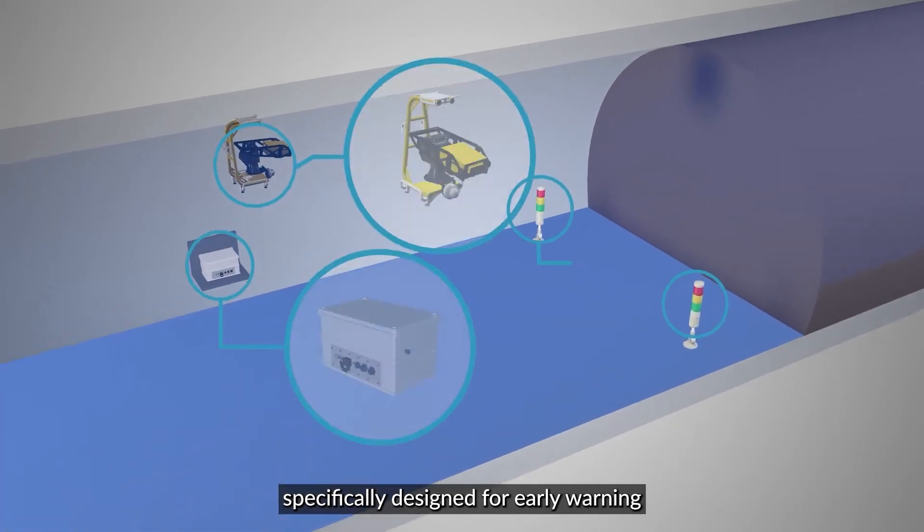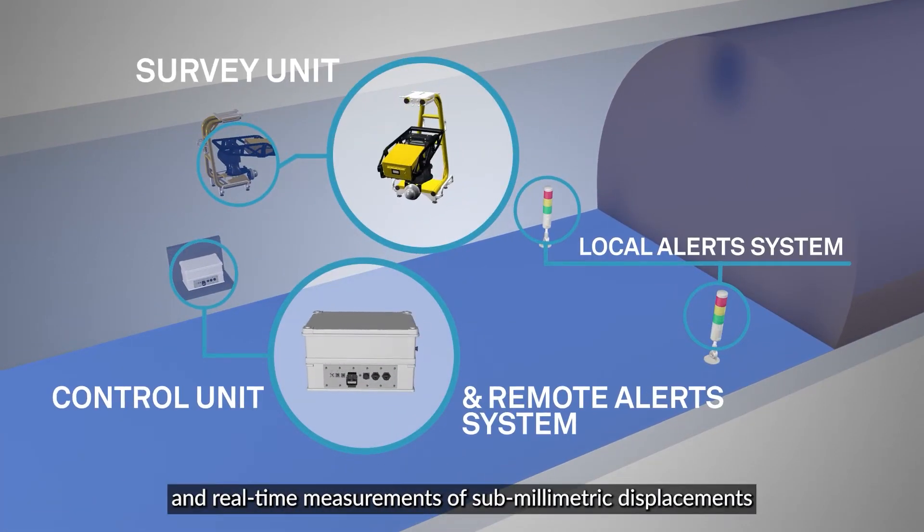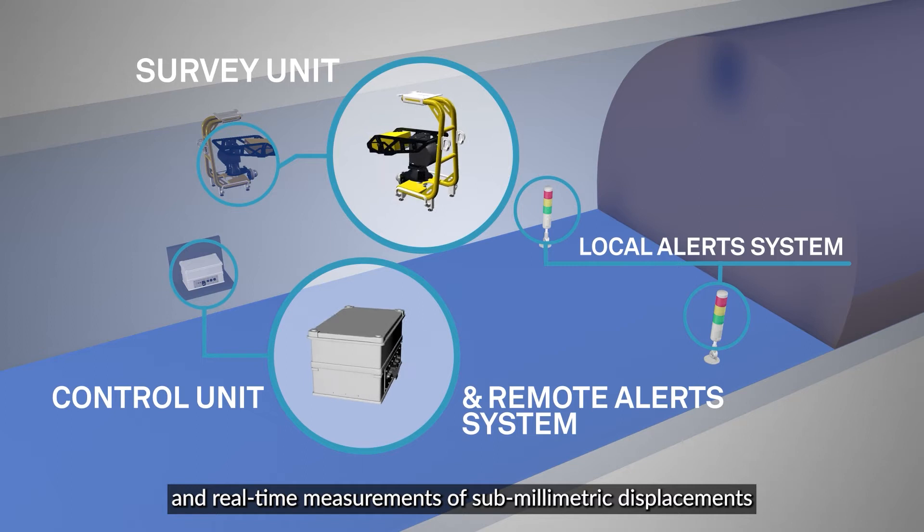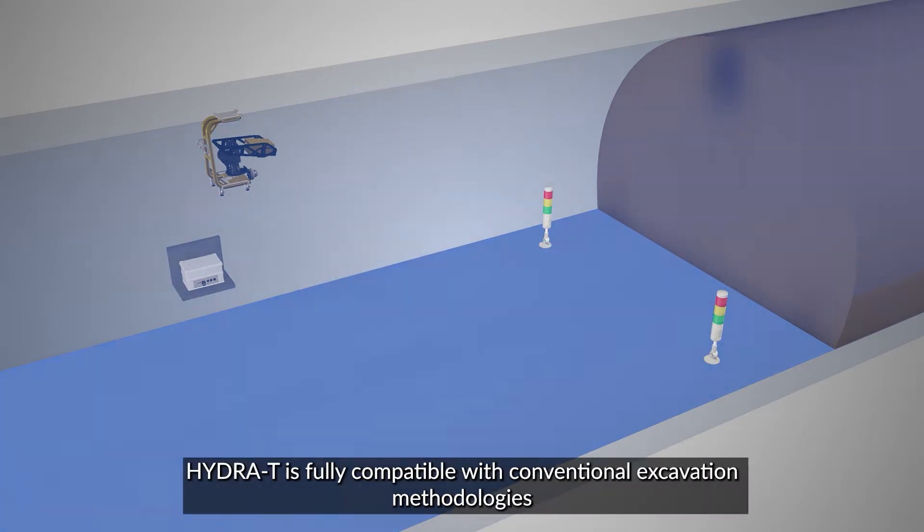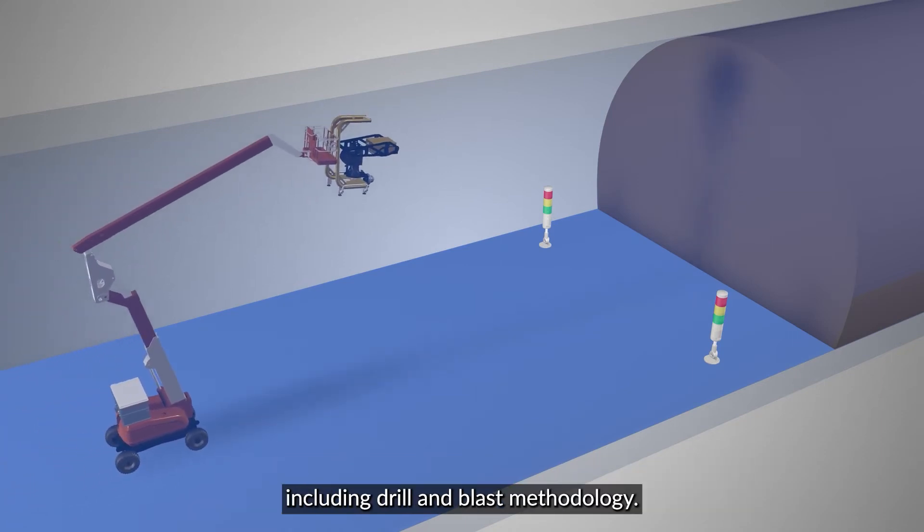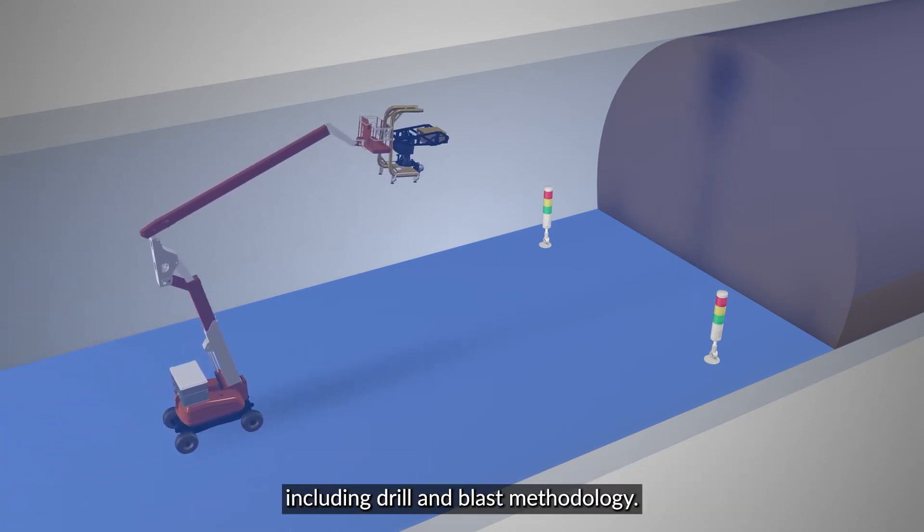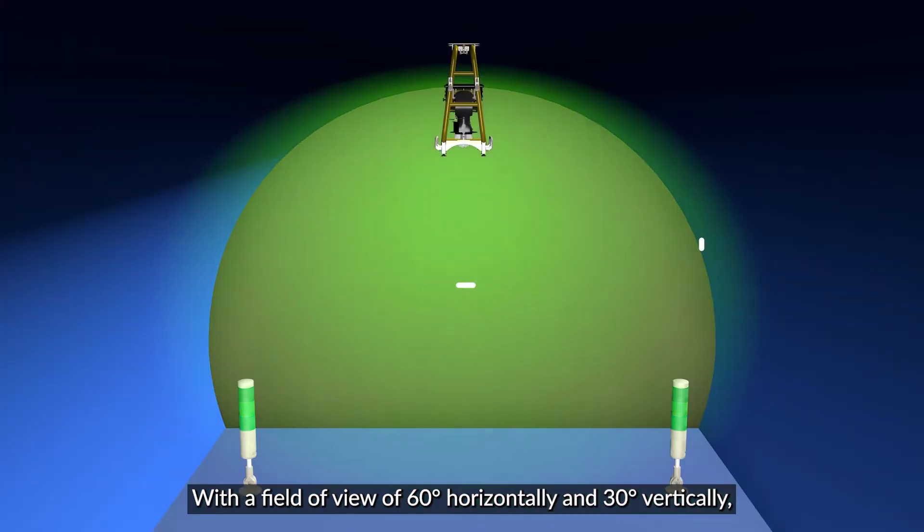Specifically designed for early warning and real-time measurements of sub-millimetric displacements at tunnel face during construction activities. Hydra T is fully compatible with conventional excavation methodologies, including drill and blast methodology, with a field of view of 60 degrees horizontally and 30 degrees vertically.